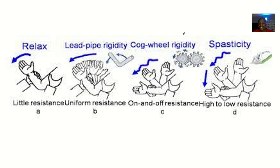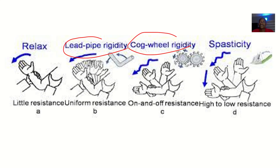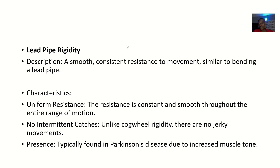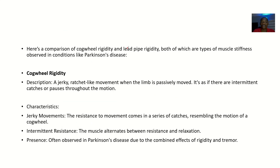So, cogwheel rigidity and lead pipe rigidity — one thing to note is that cogwheel is intermittent: the rigidity is coming and going, while lead pipe is consistent rigidity. Here is a comparison between cogwheel rigidity and lead pipe rigidity, which are both types of muscle stiffness commonly observed in conditions like Parkinson's disease.